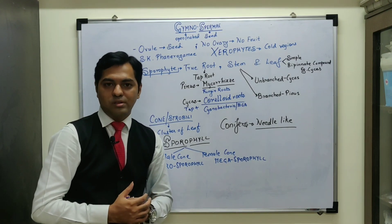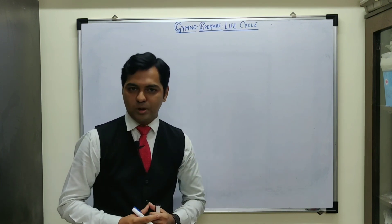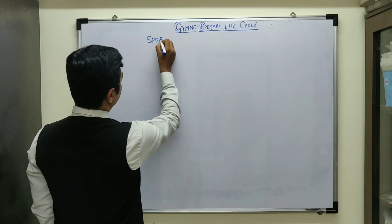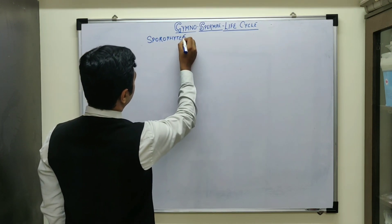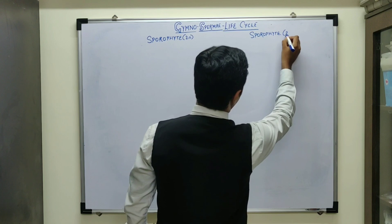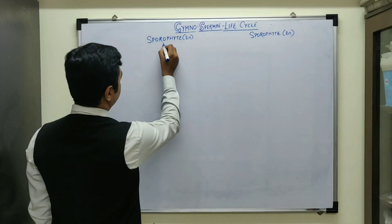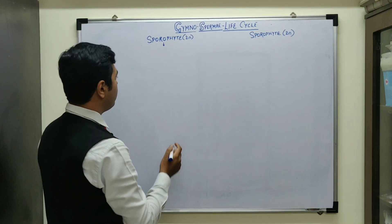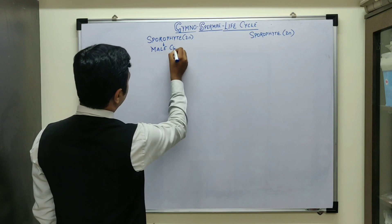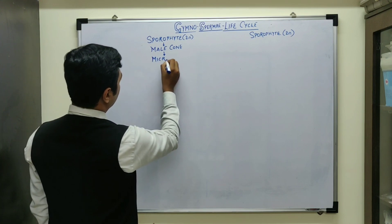Now we will discuss about the life cycle of Gymnosperme. In the life cycle, the main dominant phase is the sporophyte plant body. So we have two sporophytic plant bodies — one male parent and one female parent — and sporophytes are usually diploid. The sporophyte develops a proper root system, stem system and leaf, and the cluster of leaves it develops is known as the male cone or male strobilus. This male cone is specifically a cluster of leaves called microsporophyll.